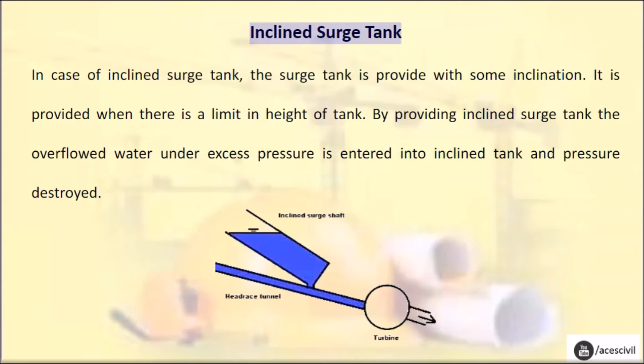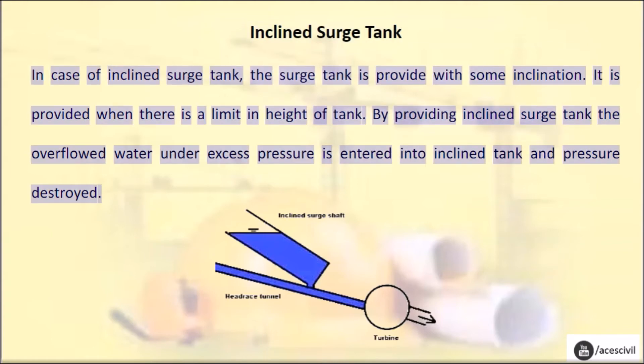Inclined surge tank: In the case of an inclined surge tank, the surge tank is provided with some inclination. It is used when there is a limit on the height of the tank. By providing an inclined surge tank, the overflowed water under excess pressure enters into the inclined tank and the pressure is dissipated.